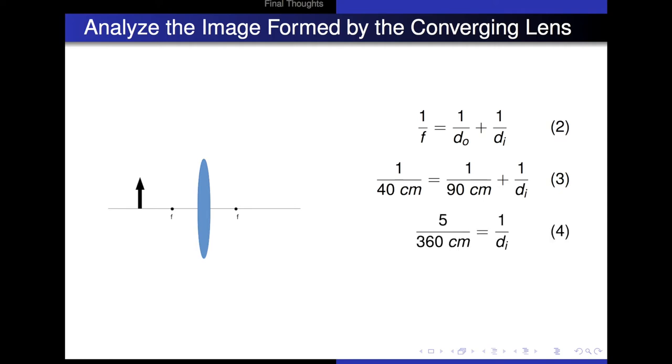So doing a little bit of math, we get 5 over 360 is equal to 1 over the image distance, or the image distance is 72 centimeters. Note that the image distance is a positive number, and by the conventions, that means it's going to be on the right-hand side of the lens.